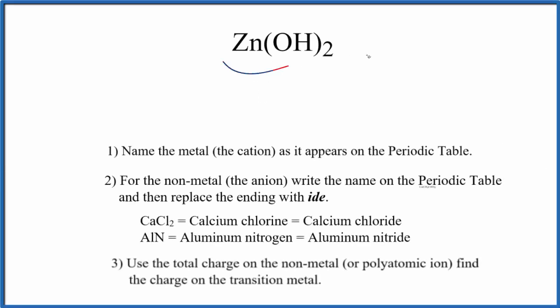In this video, we'll write the name for Zn(OH)₂. So the first thing we'll do is we need to note that we have a metal here. This is a transition metal. And then we have a polyatomic ion.